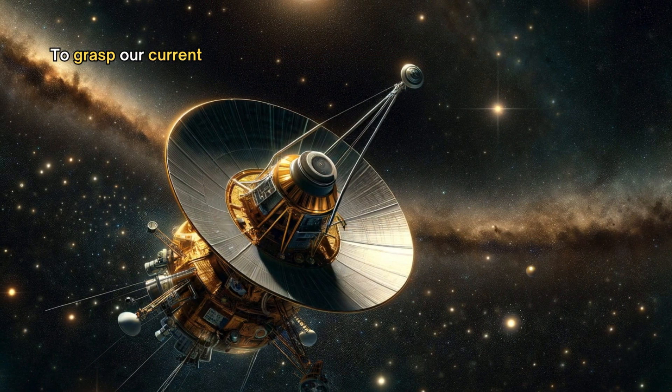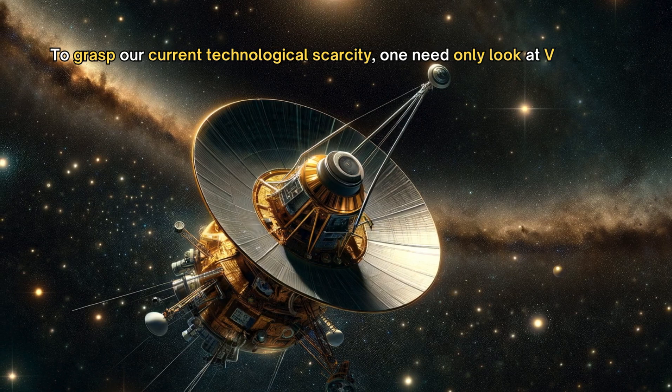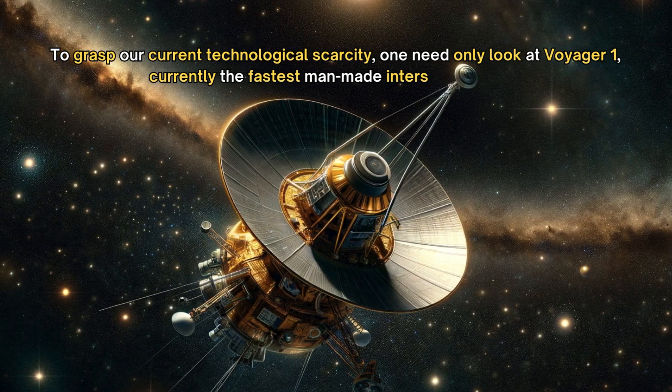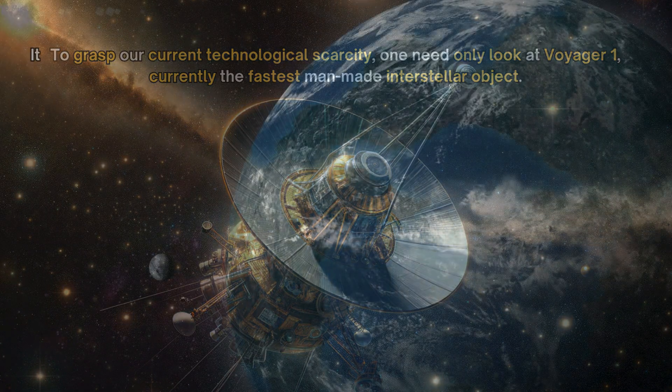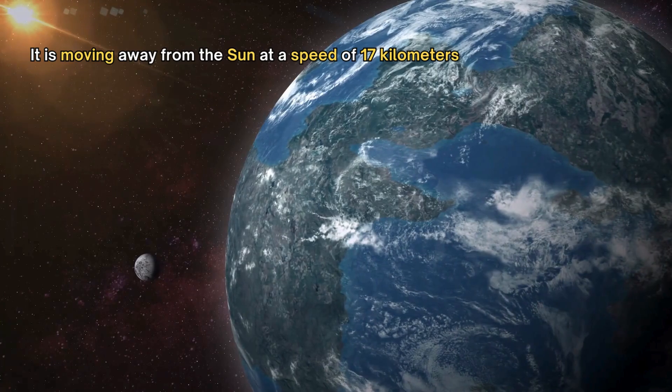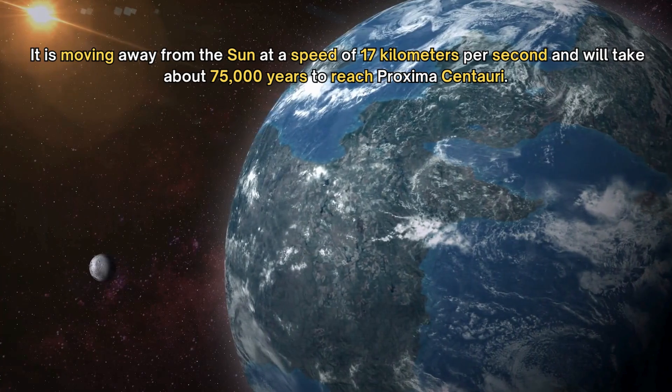To grasp our current technological scarcity, one need only look at Voyager 1. Currently, the fastest man-made interstellar object, it is moving away from the Sun at a speed of 17 kilometers per second, and will take about 75,000 years to reach Proxima Centauri.